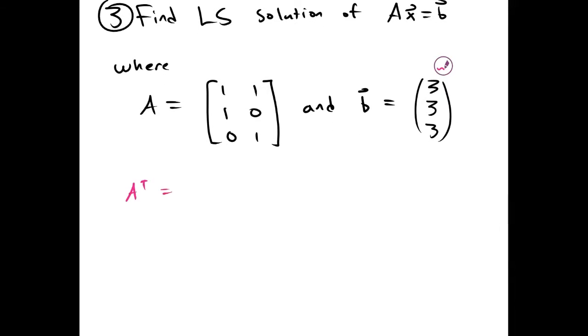So again, we can find A transpose, which is 1, 1, 0, 1, 0, 1. And we're going to multiply both sides by A transpose.